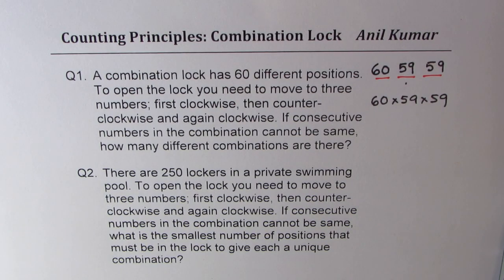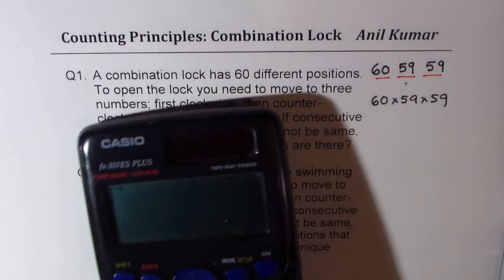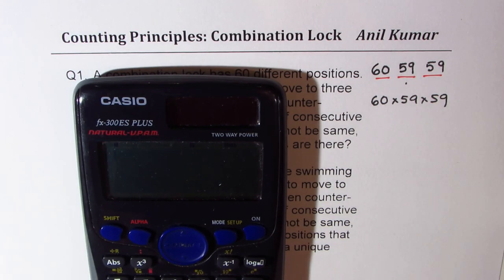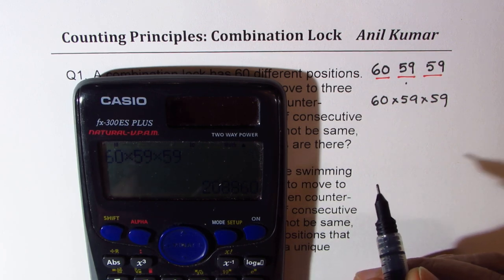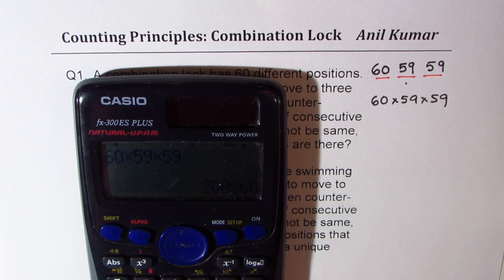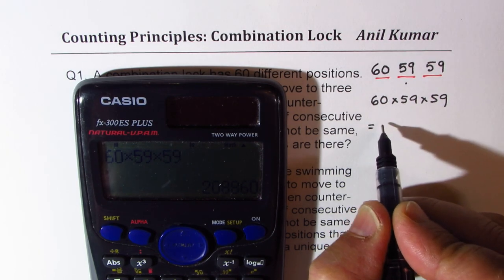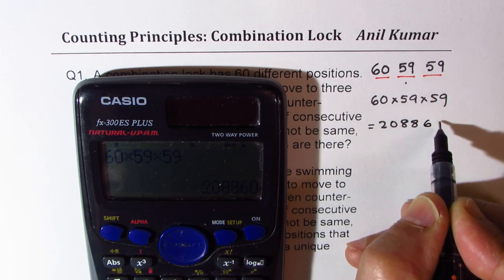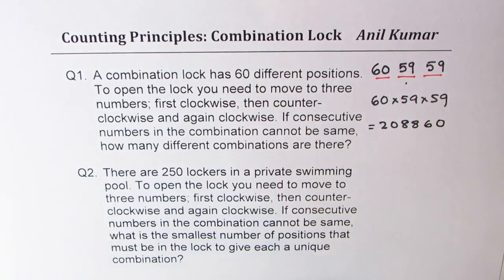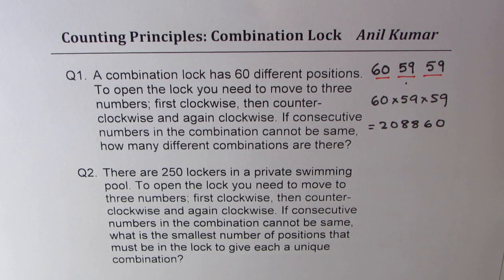Let's use the calculator to find the answer. 60 times 59 times 59 gives us 208,860. So those are the total number of combinations possible.